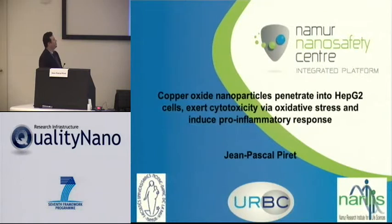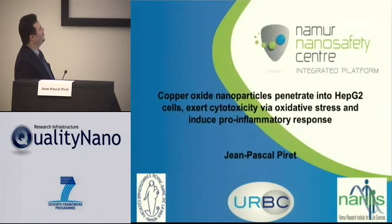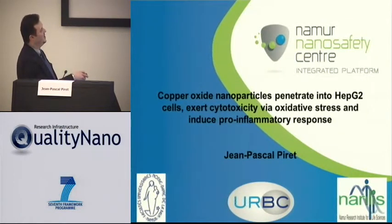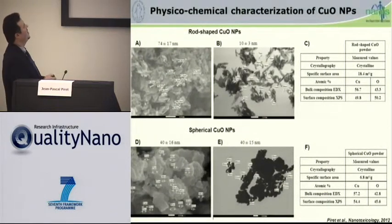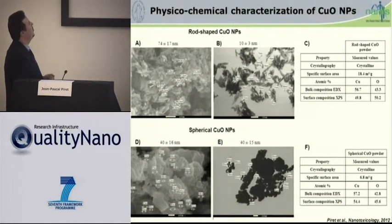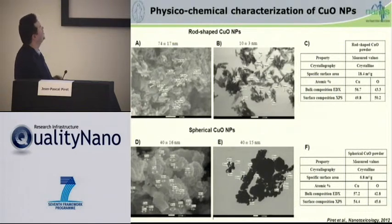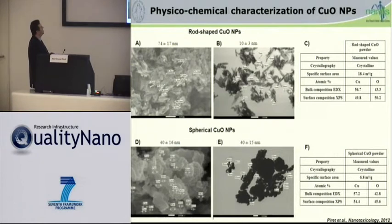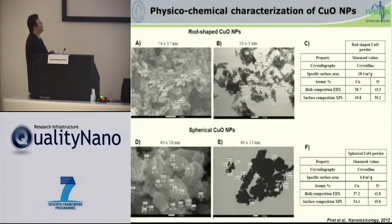Good morning, everybody. In this study, we investigated the toxic and pro-inflammatory effect of two types of copper oxide nanoparticles on human HepG2 cells. Firstly, we characterized the physico-chemical parameters of both nanoparticles based on electronic microscopy observation. We determined that the first type of copper oxide nanoparticles have a rod shape with a tiny nanometer thickness.